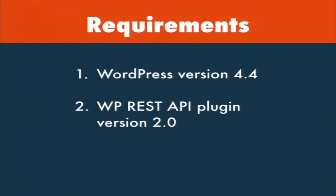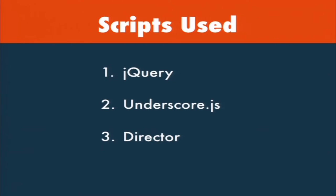The requirements to do this are you need to be running WordPress 4.4, which will be out sometime next week or so, where the infrastructure for the REST API is included. And then you're going to need the WP REST API plugin, any of the version 2s, where you get the custom endpoints. In this demonstration I'm using a few JavaScript libraries — none of these are specifically required. This is just the approach I took.